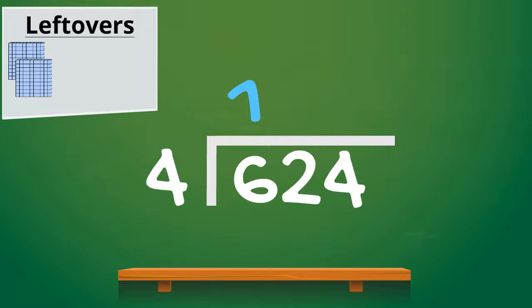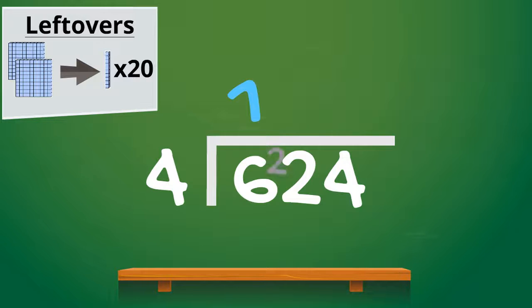So what are we going to do with that 2 that we have left over? Well we've got to ask ourselves what are they? They are two hundreds, or two boxes of a hundred. So what we can do is break them up into tens. When we break up two hundreds into tens we're going to get 20 tens — or 20 multipacks if you think of our chocolate factory. In our sum we add those 20 new tens to our two old tens and we get 22 new tens. We write that like this.